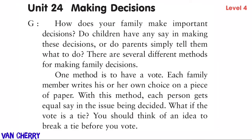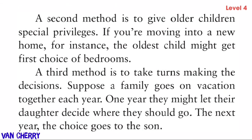Unit 24: Making Decisions. How does your family make important decisions? Do children have any say, or do parents simply tell them what to do? There are several different methods. One method is to have a vote — each family member writes his or her own choice on a piece of paper, so each person gets equal say in the issue being decided. If the vote is a tie, you should think of a way to break it before you vote.